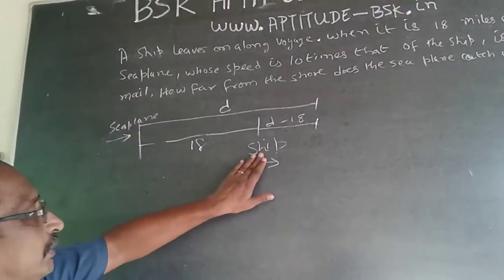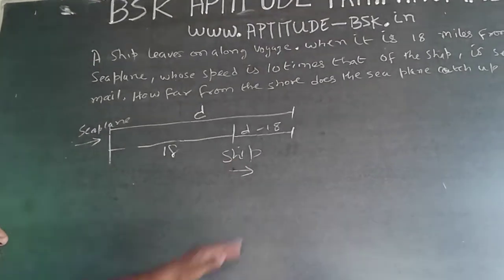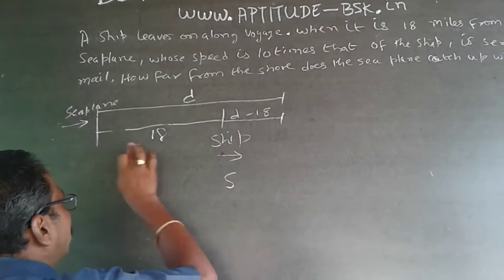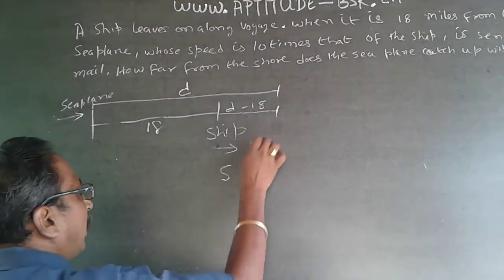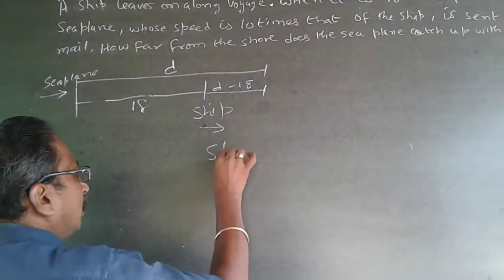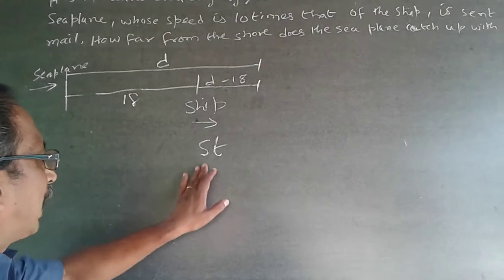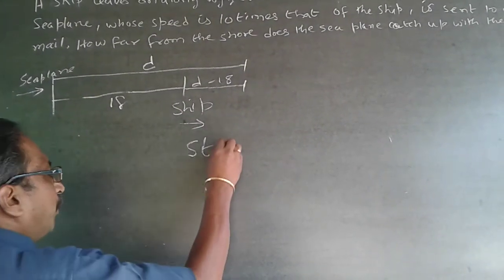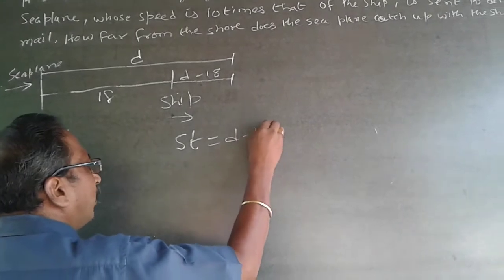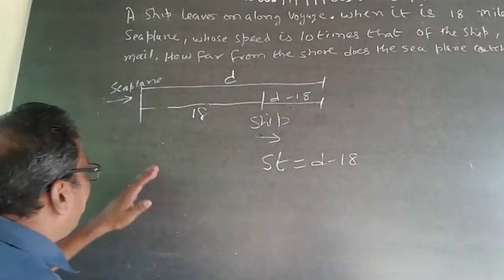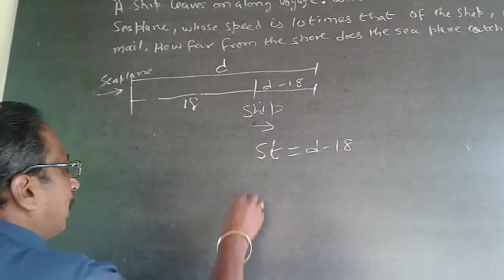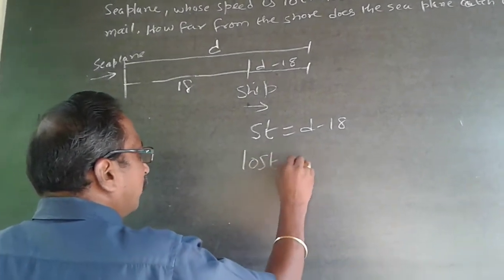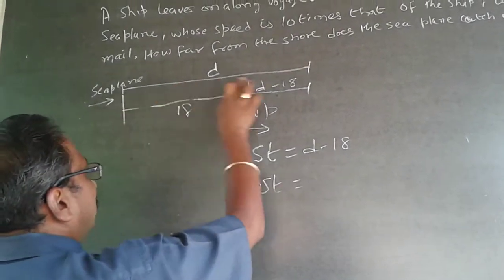Let the speed of the ship be S. The time taken for the ship to travel from its current position to the meeting point is the same as the time taken by the seaplane — let it be T. So S times T equals the distance traveled by the ship, which is D minus 18. The seaplane is 10 times as fast, so its speed is 10S. Time taken is the same T, so the distance traveled by the seaplane is 10S times T, which equals D.